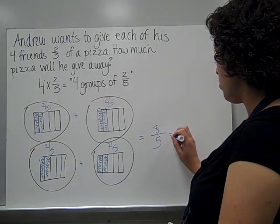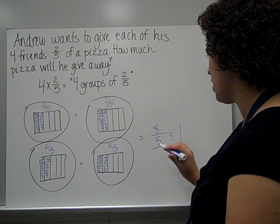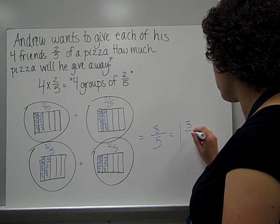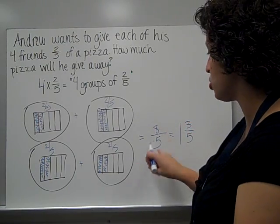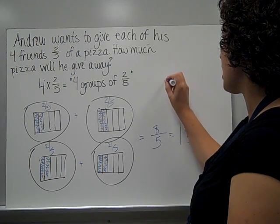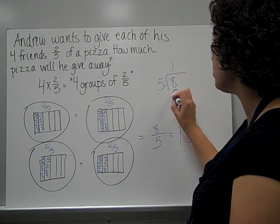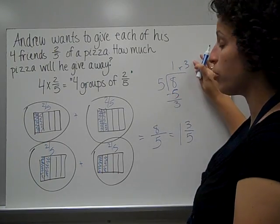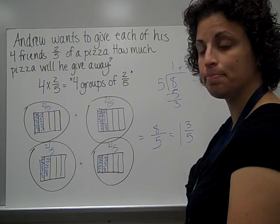I know that 5 can go into 8 one time, and that would leave me 3 left over — so 3 fifths. What I just did in my head was 8 divided by 5: 5 goes into 8 one time with remainder 3. Remember the remainder becomes the numerator, and the denominator stays the same.